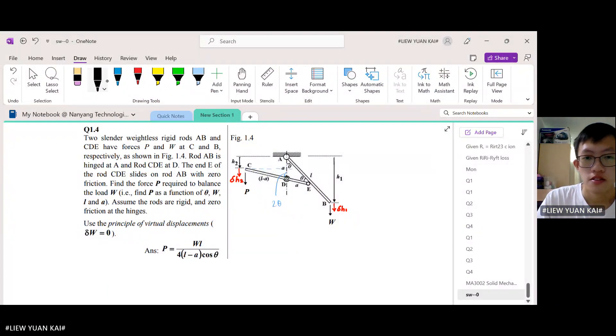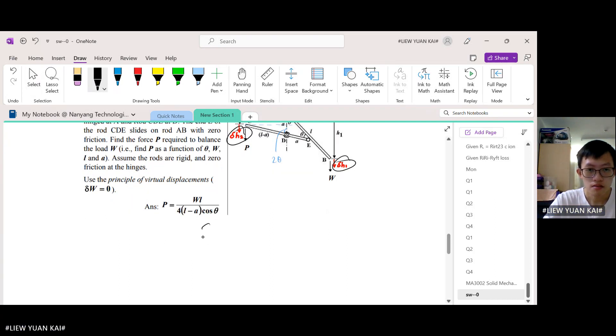Now question 4: find P that will keep this structure in balance. First things first, assign the coordinates, which they have done. The displacement coordinate for P is h2, the displacement coordinate for W is h1. Now write the PVD formula: sum of work done is equal to zero.